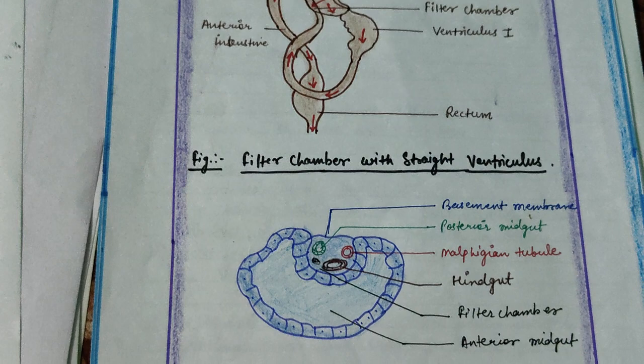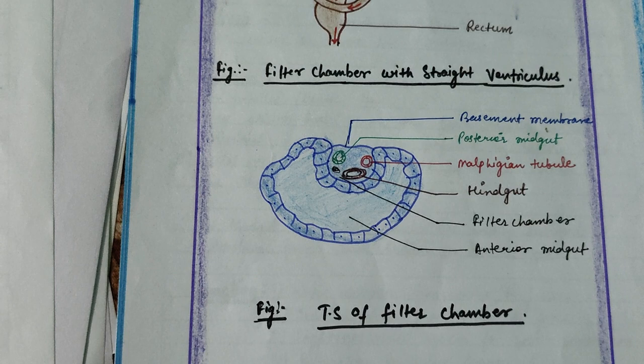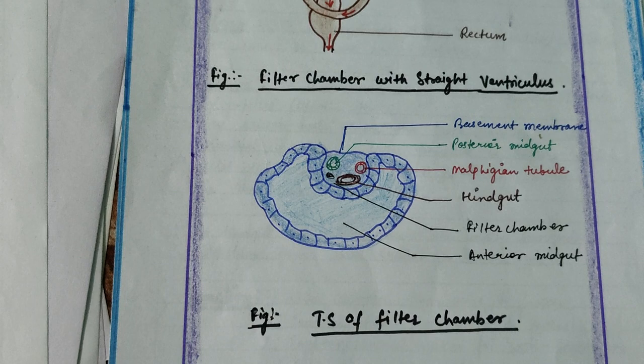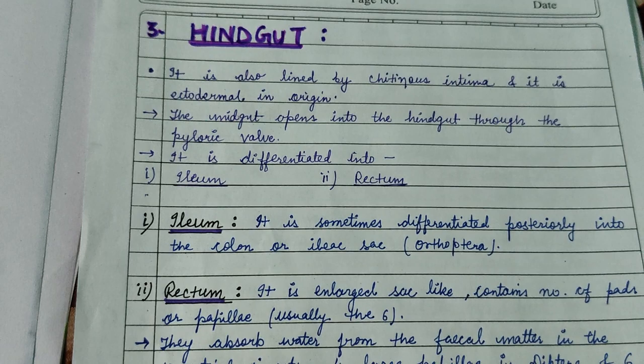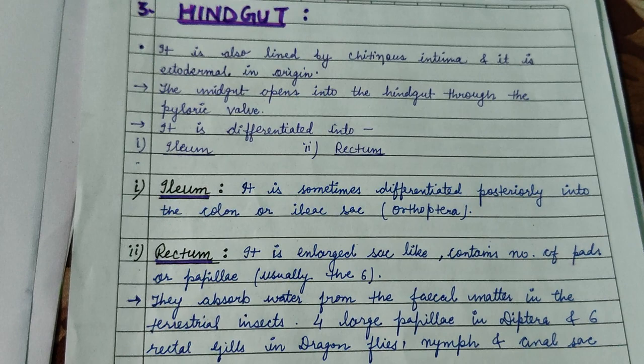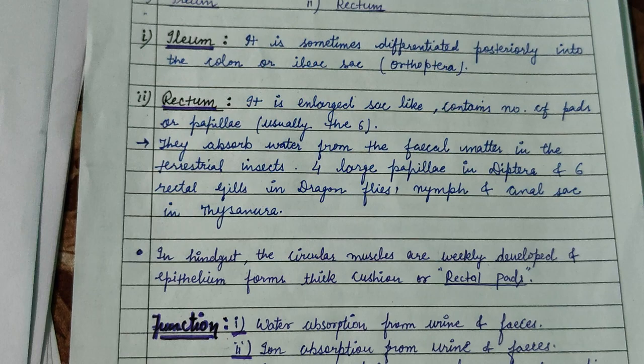A transverse section of the filter chamber shows the basement membrane, posterior midgut, hindgut, filter chamber, anterior midgut, and the Malpighian tubules, which help with excretion. The hindgut is the posterior part of the body, also lined by the chitinous intima and is of ectodermal origin. It consists of the ileum and the rectum; the circular muscles are weakly developed and the epithelium forms thick cushions or rectal pads.